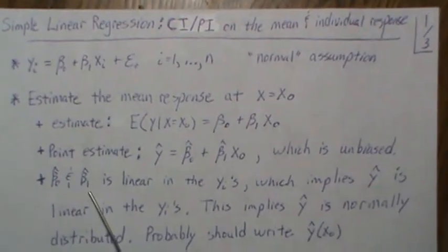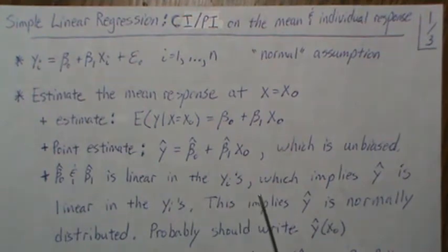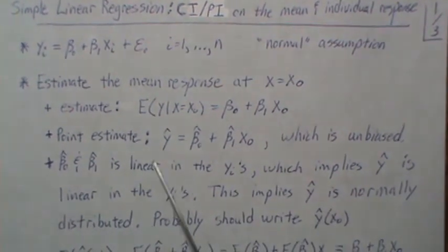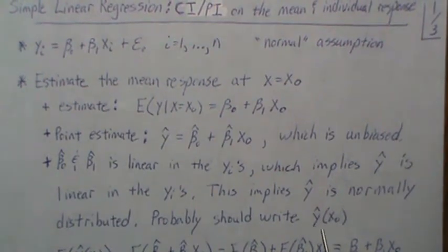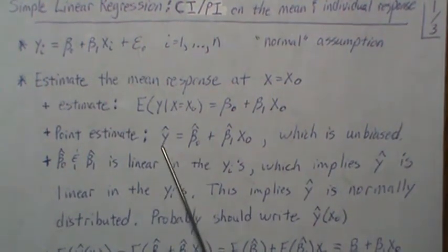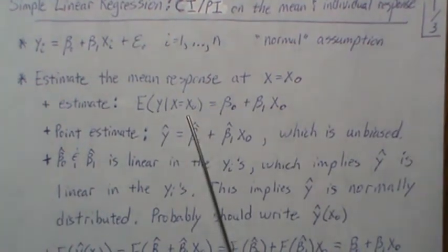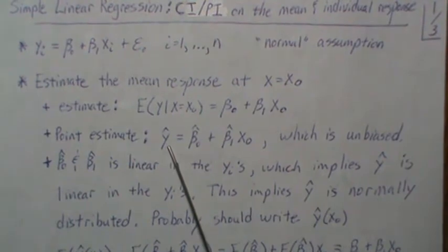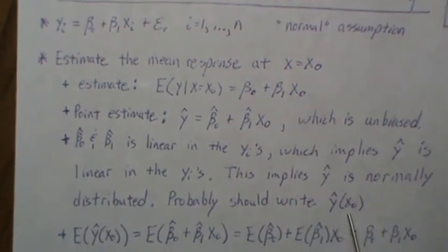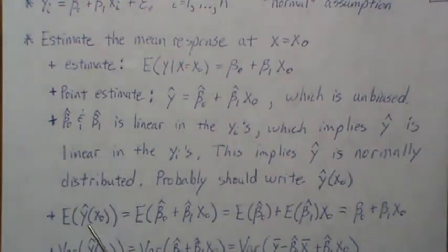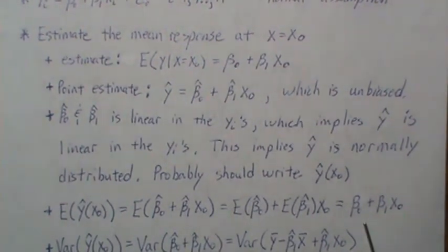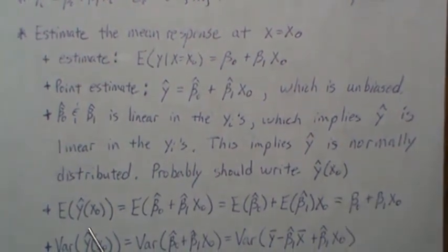The beta parameters β̂₀ and β̂₁ are linear in the y's, which implies ŷ is linear in the y's, which implies ŷ is normally distributed. I should write ŷ as a function of x₀, because we're looking at the average response for y at x equals x₀. So the least squares line is evaluated at x₀ — it's technically a function of x₀. The expected value of ŷ(x₀) is the regression line: β₀ + β₁x₀.